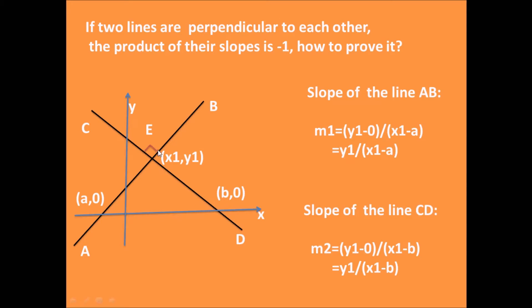Based on two points on the line, we can calculate the corresponding line slope. For line AB, we can get the slope m1 = y1/(x1-a).